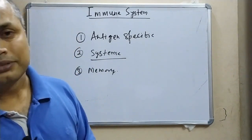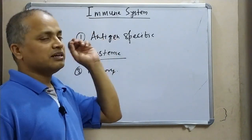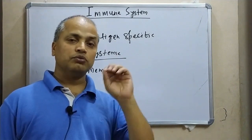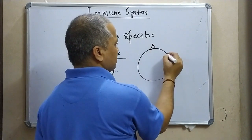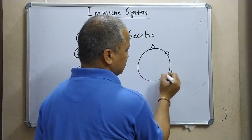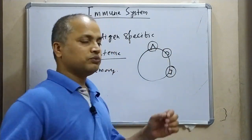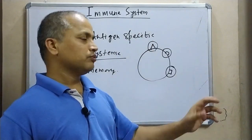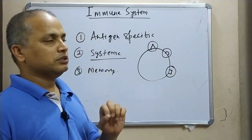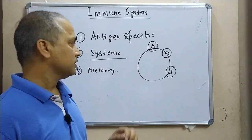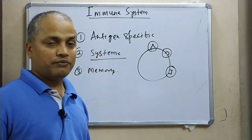The third property is memory. Whenever a particular pathogen comes to our body, its specific antigenic components are recognized and memorized by our immune system. So if a new pathogen comes with the same antigenic components, the immune system will work against it. The immune system is antigen-specific — not bacteria-specific. It is systemic in nature and has a very good memory.